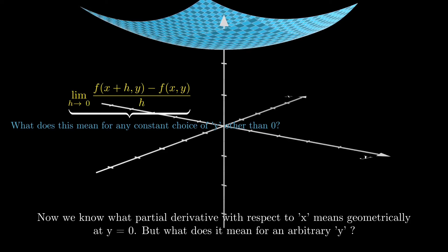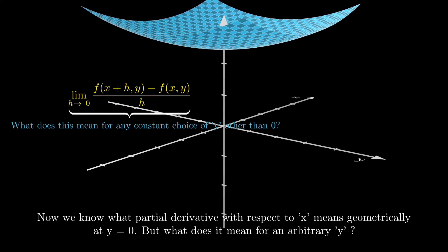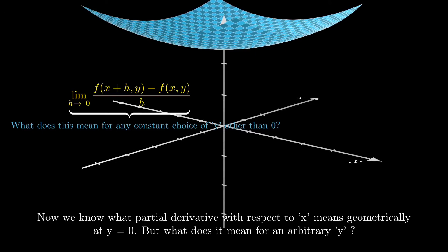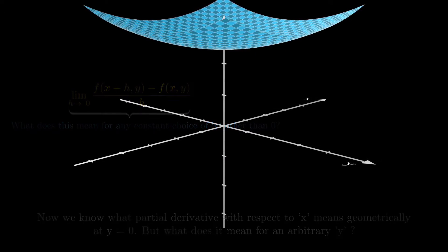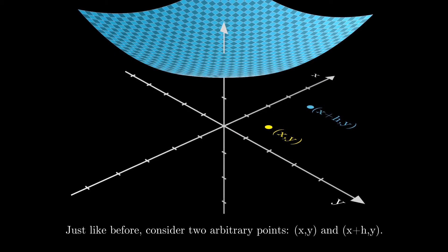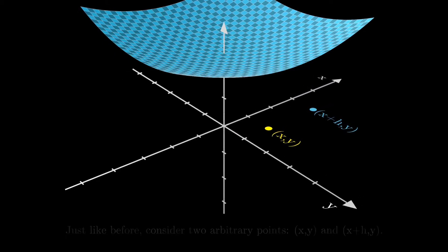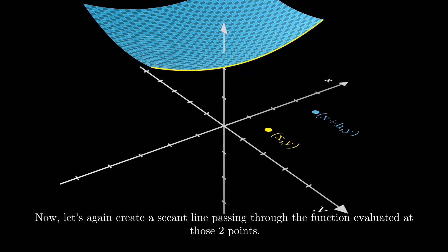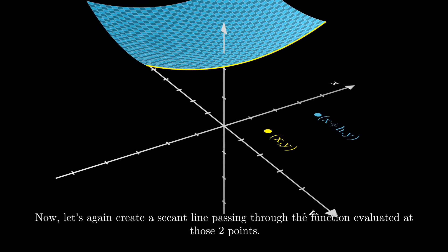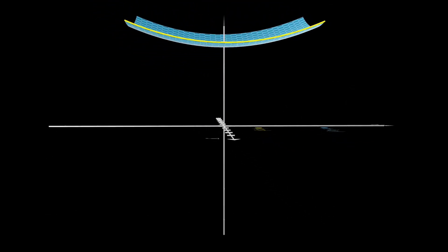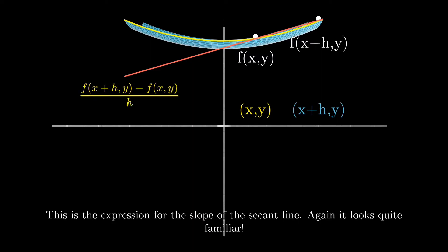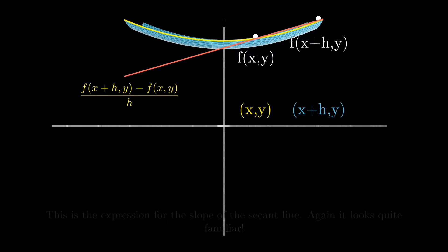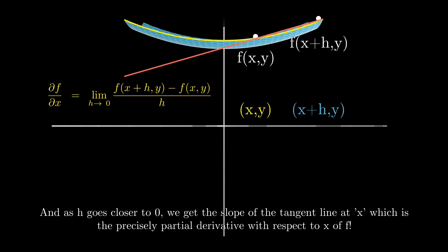We now know what the partial derivative with respect to x means geometrically at y equals zero. For an arbitrary y, consider two arbitrary points and again create a secant line passing through the function at those two points. As h gets closer to zero, we get the slope of the tangent line at x, which is precisely the partial derivative with respect to x of f.